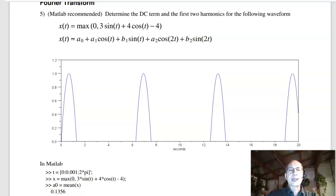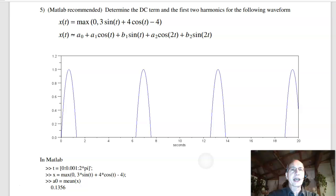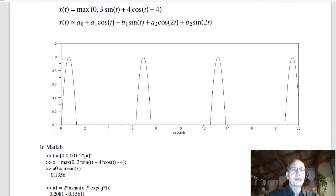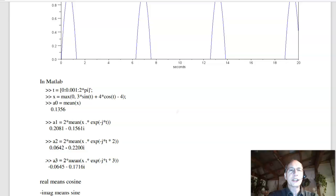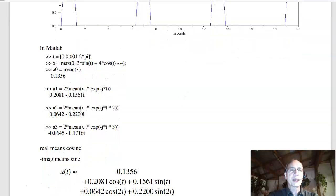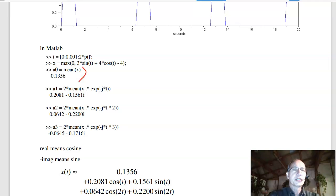Problem 5. This is really a MATLAB problem. The trick is first to input the signal X of T into MATLAB. And one way to do that is I'm going to have T go from 0 to 2pi. And this is periodic in 2pi. X is the maximum of 0, 3 times sine of T plus 4 times cosine of T minus 4. Should give you the waveform shown in that figure. Find the Fourier series approximation out of the second harmonic.